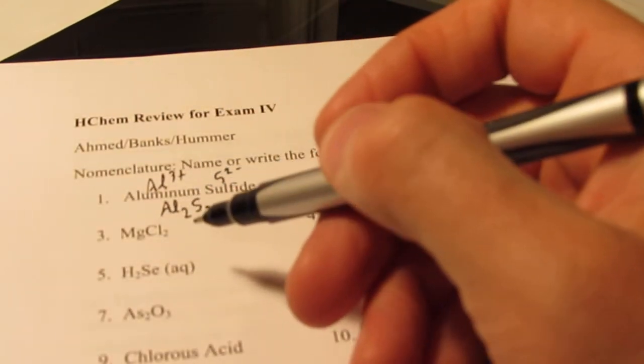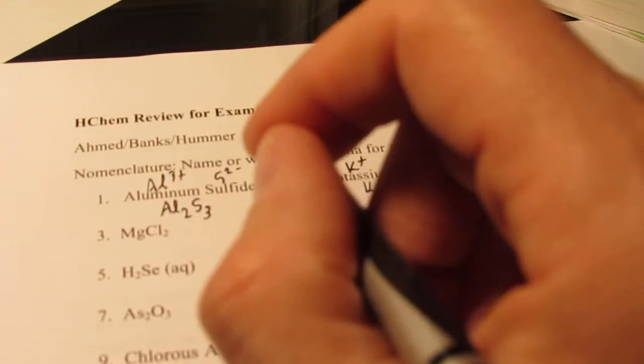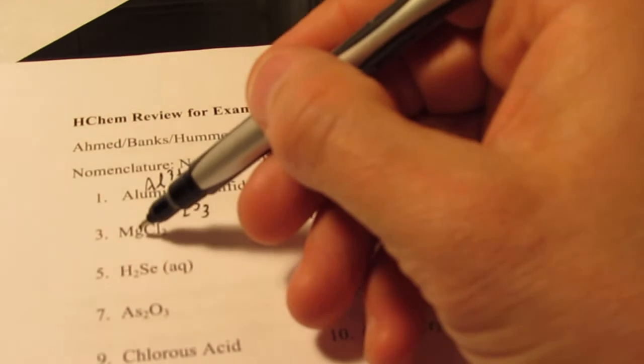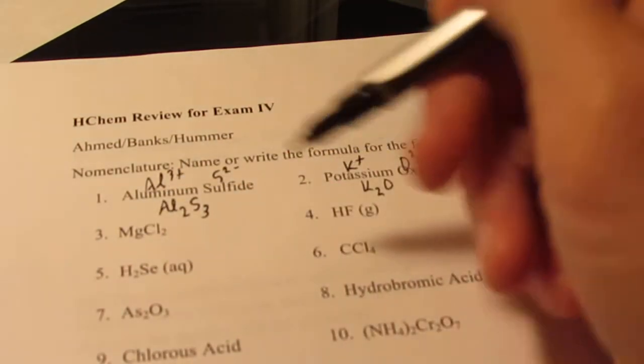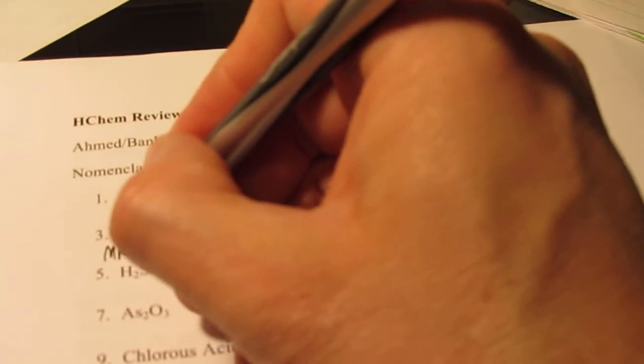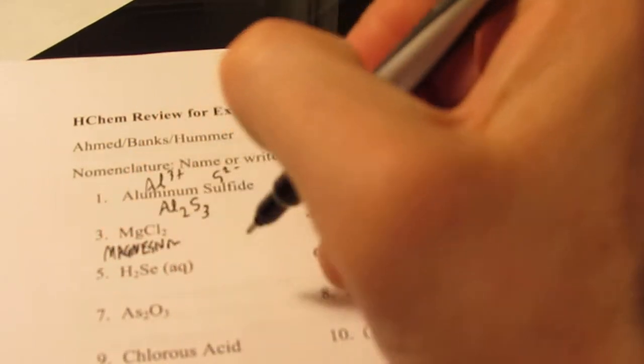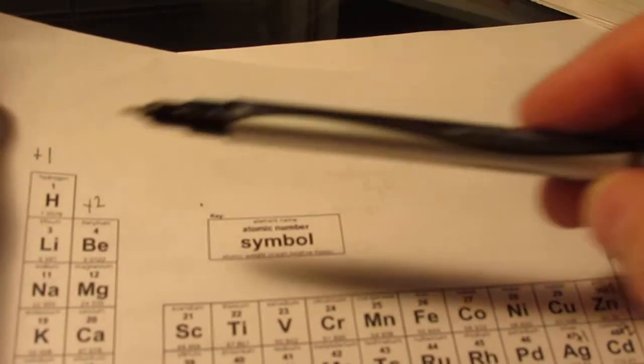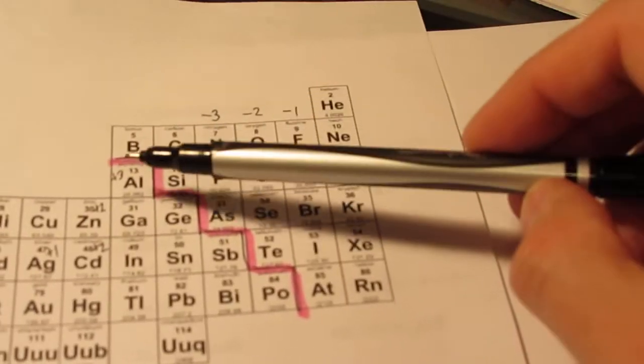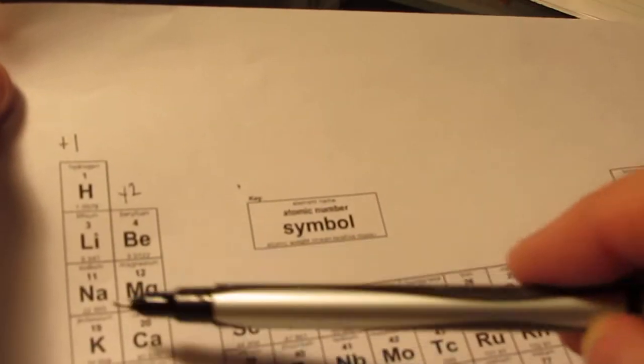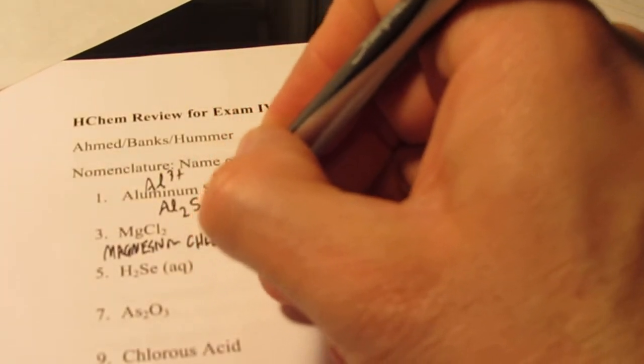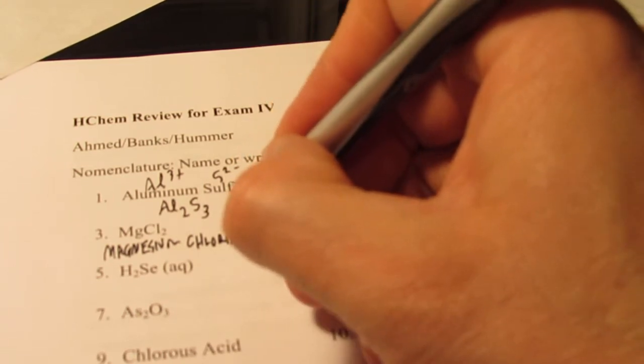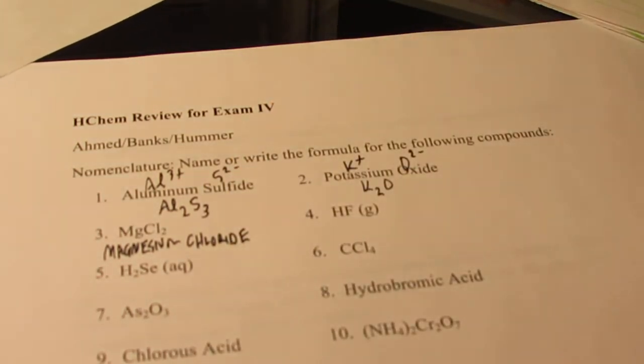Now we're going to name a couple. Number three, MgCl2. Do not call this magnesium dichloride. Don't do it. It's a metal in there. We only use prefixes kiddos if we have two non-metals stuck to each other. So we're just going to say magnesium. It does not need a Roman numeral. Remember you only need Roman numerals if the metal is not in group 1 or 2, and it's not aluminum, zinc, cadmium, or silver. So magnesium does not need a Roman numeral in its name. Cl2 is chlorine, but remember all diatomic binary compounds end with ide. So that's magnesium chloride.